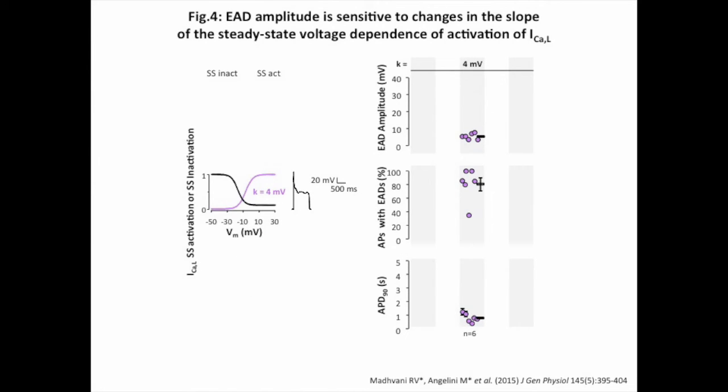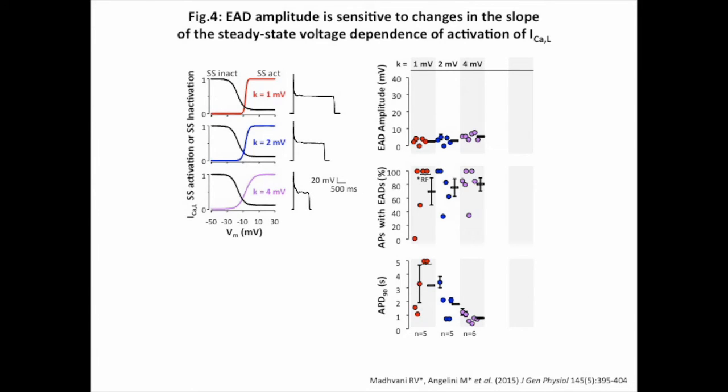Another set of parameters affecting the L-type calcium current window current region are the steepness of the voltage dependence of activation and inactivation. In Figure 4, we examined the effects of decreasing or increasing the slope factor, K, of the voltage dependence of activation. We found that at greater steepness, EAD amplitudes decreased. At the steepest slope, the APD was prolonged such that in some cases, the action potential failed to repolarize before the next pacing stimulus. On the contrary, when the effective charge of the activation curve was reduced, EAD amplitudes increased.